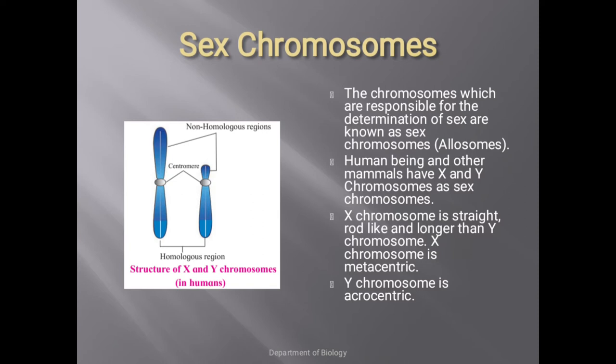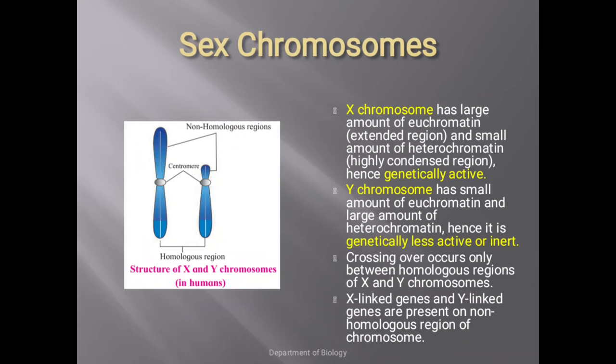In humans and other mammals, X and Y chromosomes are the sex chromosomes. The X chromosome is a straight rod-like structure, longer than the Y chromosome. X chromosome is metacentric — its centromere is present in the center — while Y chromosome is acrocentric. X chromosome contains a large amount of euchromatin and small amount of heterochromatin, hence it is genetically more active. Y chromosome has less euchromatin and large heterochromatin, making it genetically less active or inert.